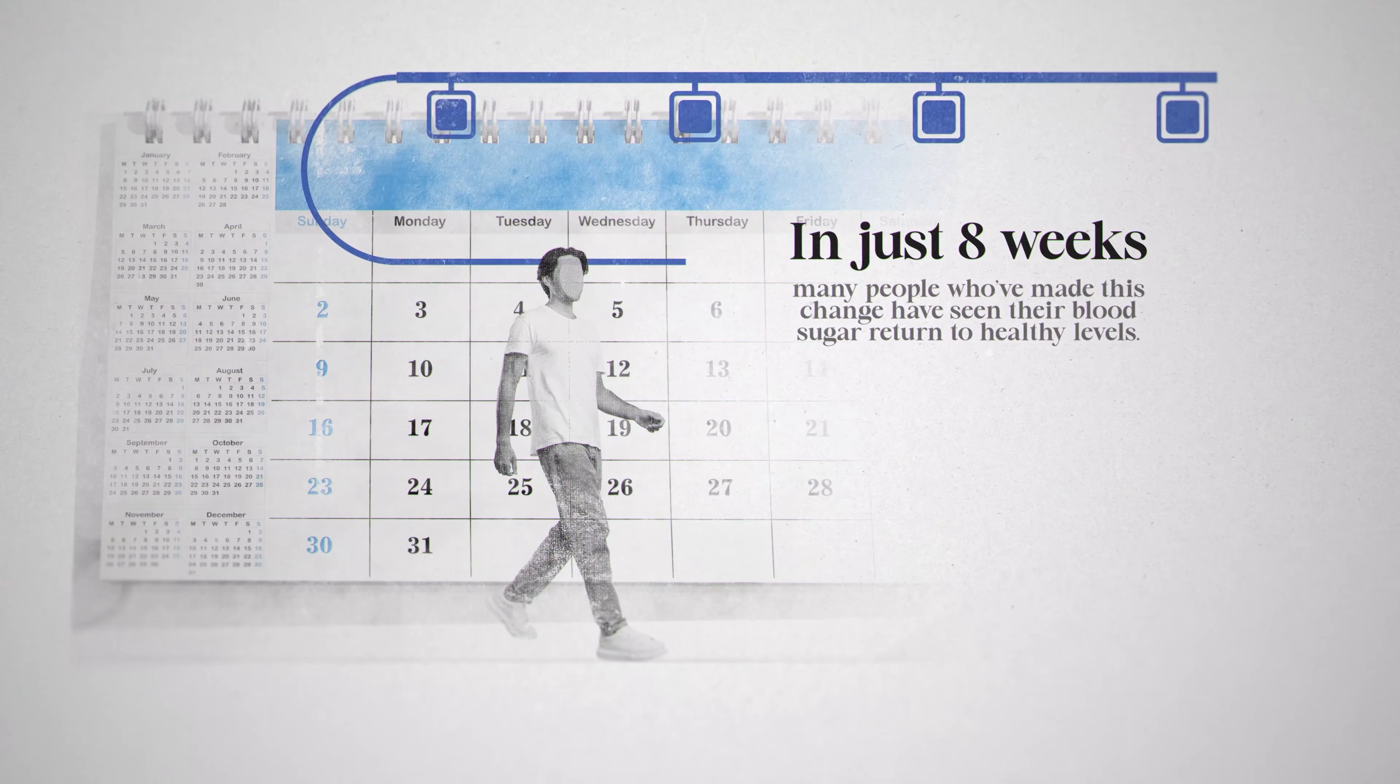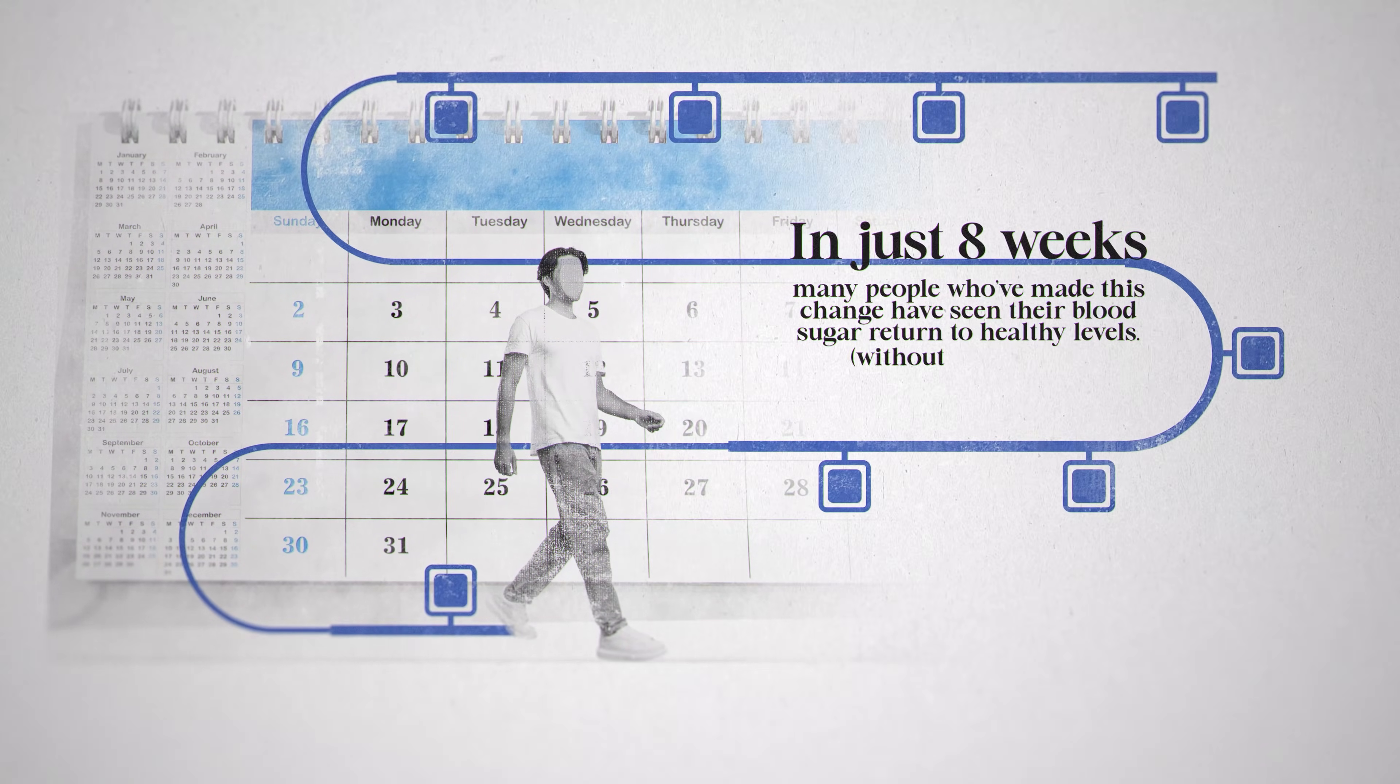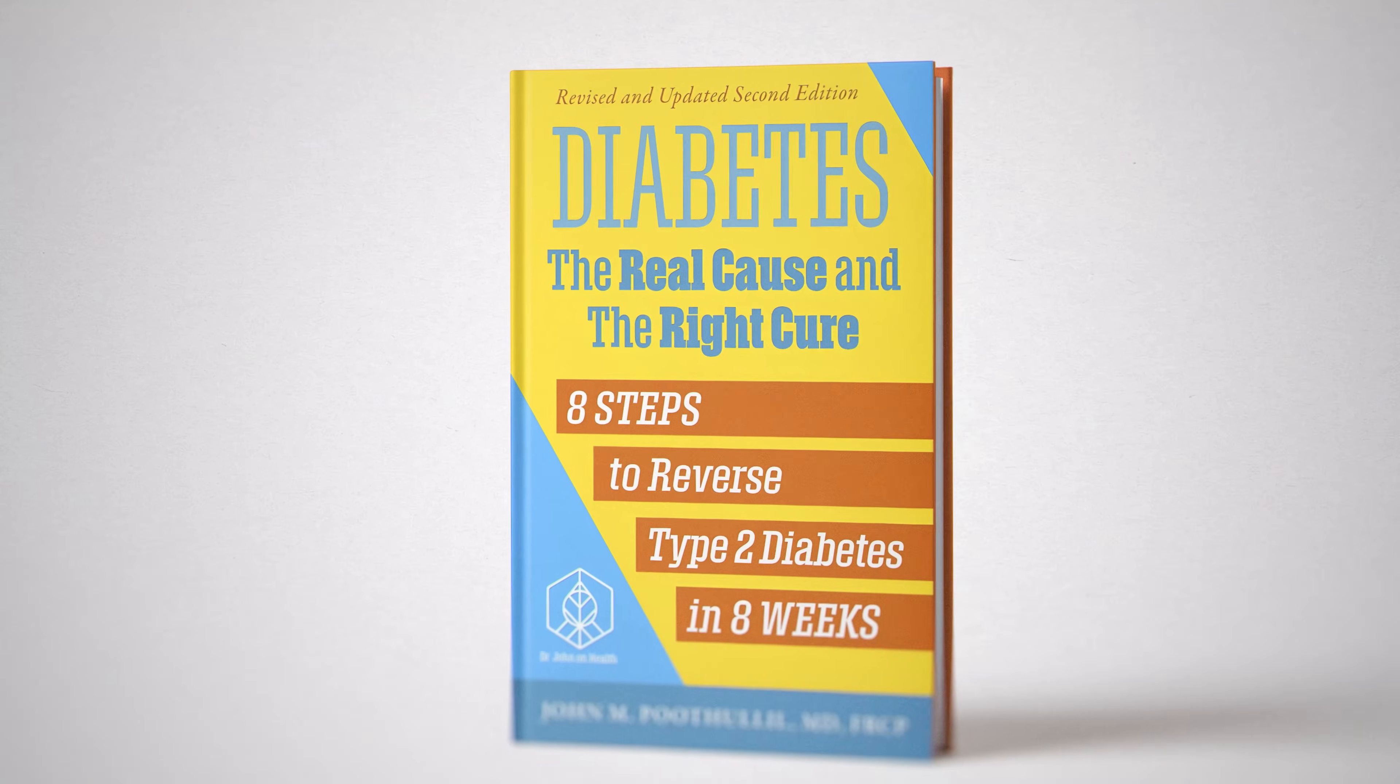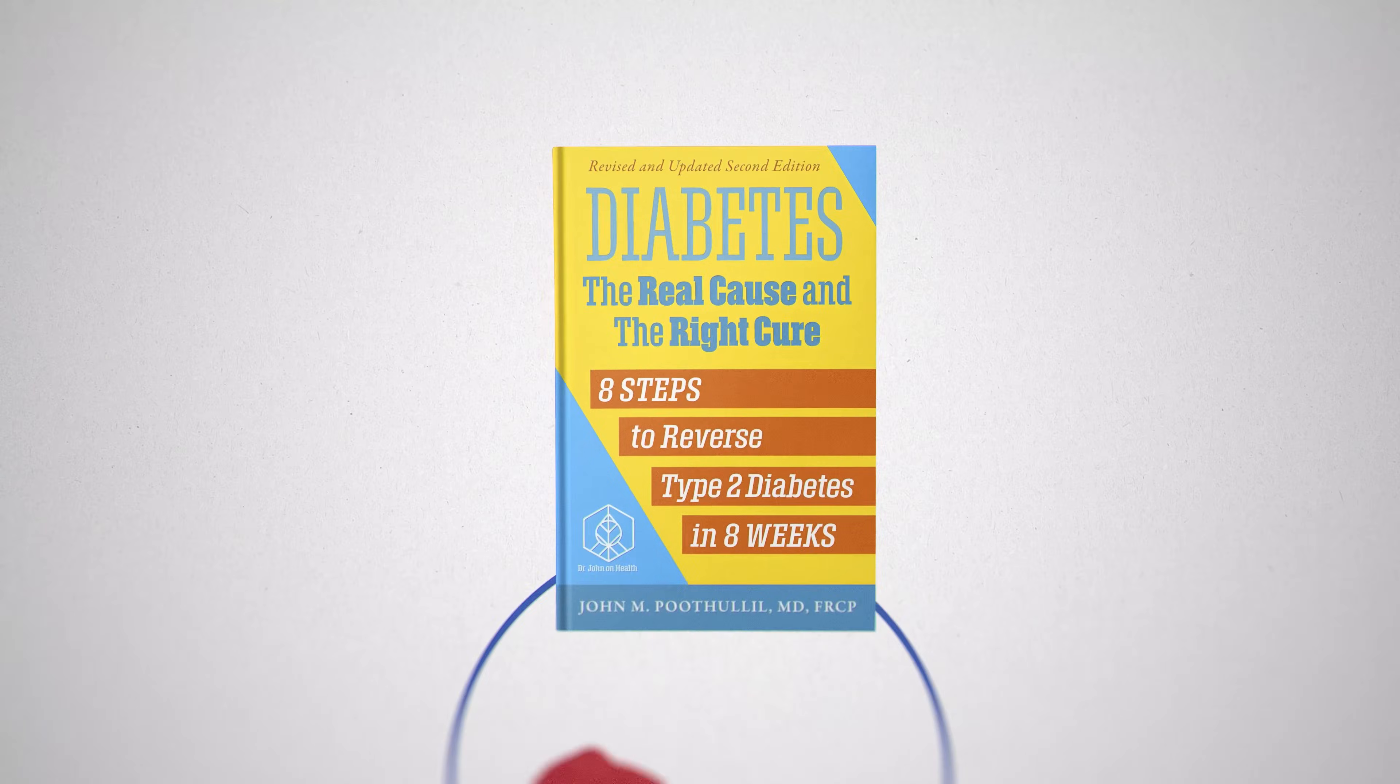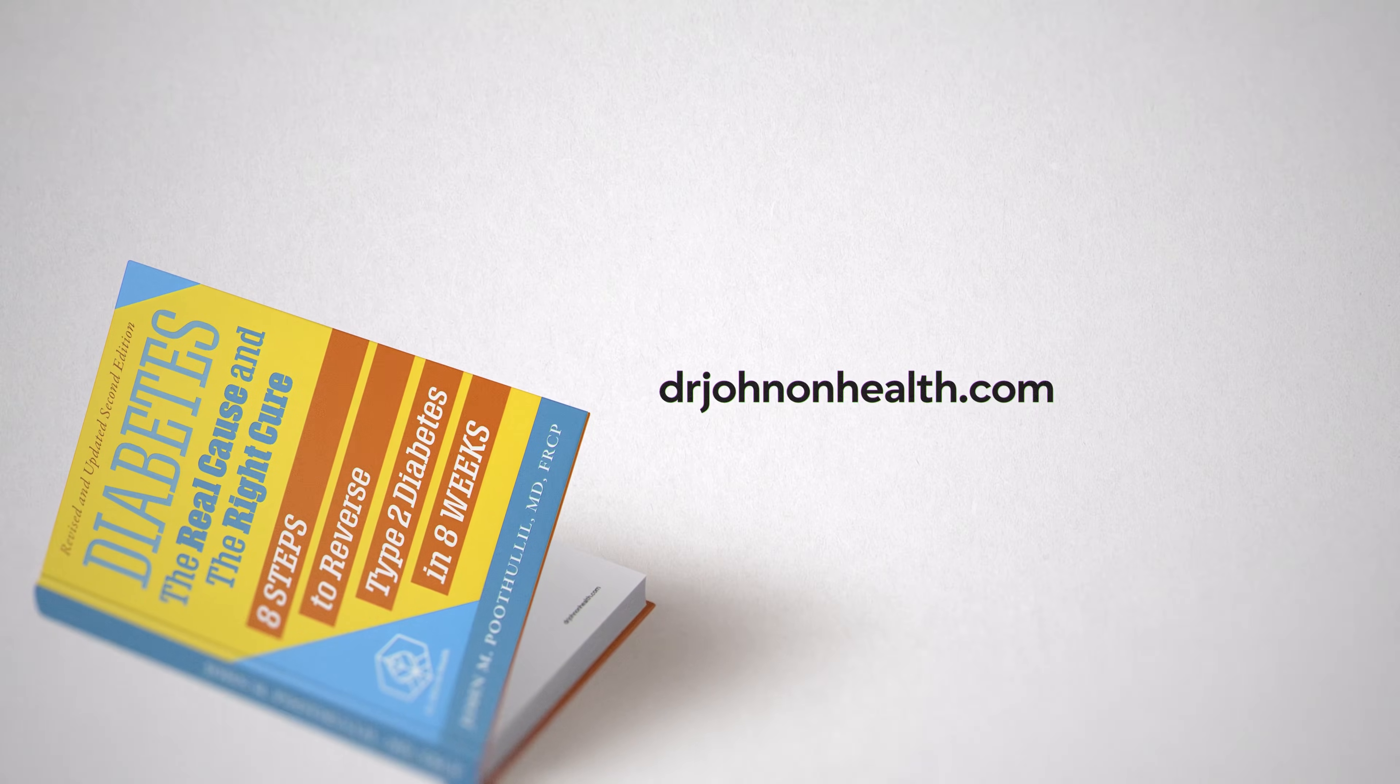In just eight weeks, many people who've made this change have seen their blood sugar return to healthy levels without medication. Discover the full story in Diabetes: The Real Cause and the Right Cure. Your body can heal. You just need to know how. Order your copy today at drjohnandhealth.com and start your journey to lasting wellness.